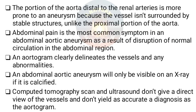The portion of the aorta distal to the renal arteries is more prone to aneurysms because the vessel is not surrounded by stable structures. Abdominal pain is the most common symptom of an abdominal aortic aneurysm. An aortogram clearly delineates the vessels and any abnormalities. An abdominal aortic aneurysm will only be visible on X-ray if it is calcified.